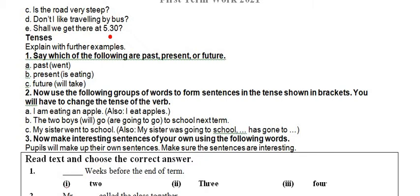Now let's look at tenses. Sometimes when we talk about grammar we use the word tense. Tense really means time, and we talk about a verb being in a certain tense. Tenses tell us about time. Tenses are usually divided into three groups: the past — jo guzar chuka, yesterday; the present — jo aaj hai, today; and the future — tomorrow. For example, 'I am going to school now' is present. 'I went to school yesterday' is past. 'I shall go to school tomorrow' is future.